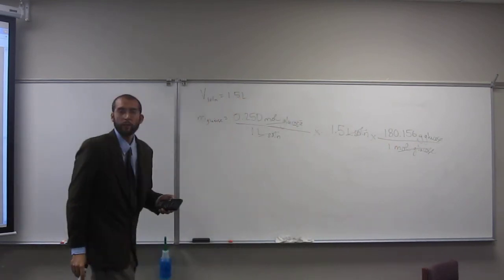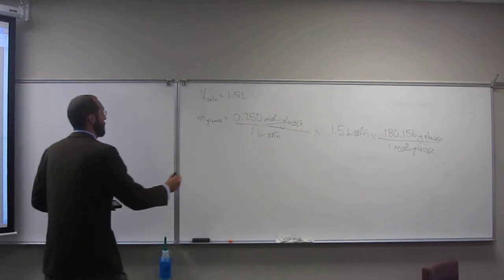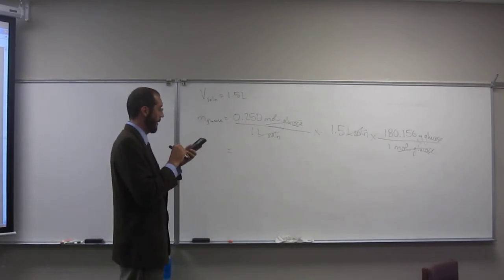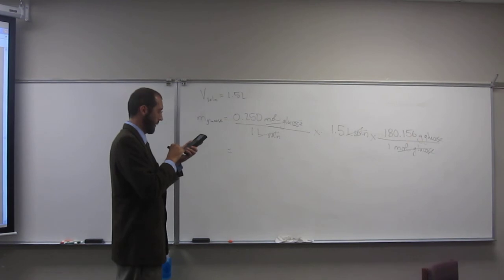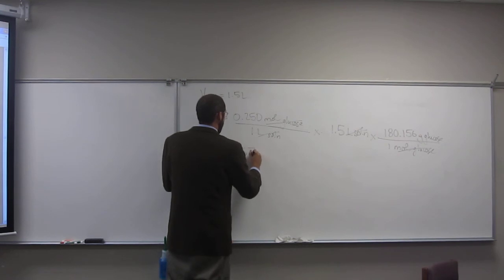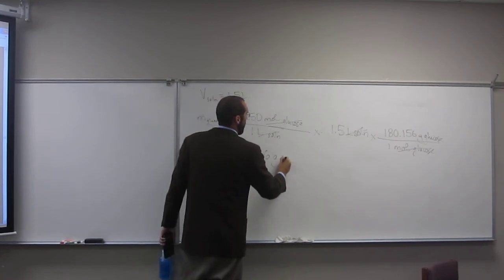Do we have the mass of glucose we want now? Yes. Will that give it to us? So now all we've gotta do is take 180.156, multiply that by 1.5, and multiply that by 0.250, and you get 67.6 grams of glucose.